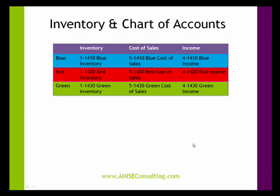When I am tracking inventory, what I do is set up a chart of accounts like this. If the inventory is a large number of items and I can categorize them into perhaps three or more areas — such as blue, red, or green — I'm just using widgets in this case. I would then highlight under inventory and set up three separate items as general ledger codes.